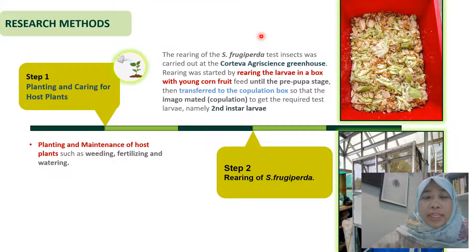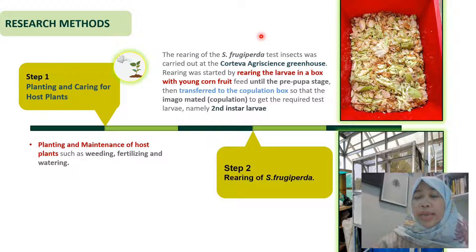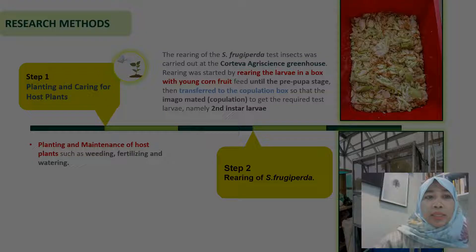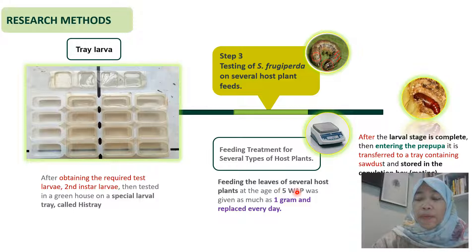The first step of the research method was planting and caring for the host plants, including weeding, fertilizing, watering, and so on. The second step was rearing of S. frugiperda. The rearing of the larvae was carried out in Corteva's greenhouse in Lemahabang, Karawang. Rearing was started by placing the larvae in a box and feeding them with young corn until the prepupa stage, then transferring the larvae into the rearing box. The third step was testing S. frugiperda on several host plants by feeding leaves of several host plants at the age of five weeks after planting.